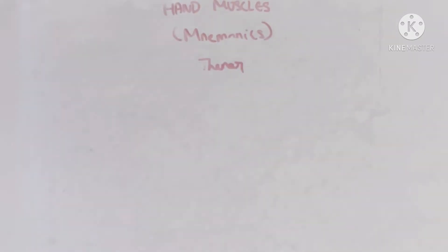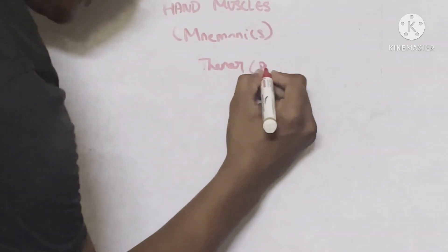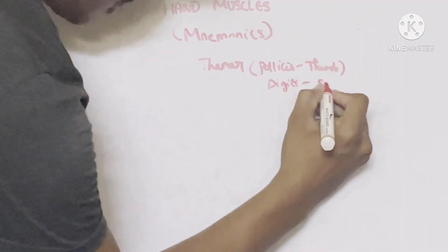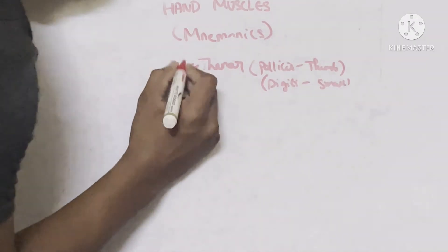Before going into thenar, just understand one thing. The word pollicis means nothing but thumb. Digiti refers to small finger. We know that thenar have four muscles.